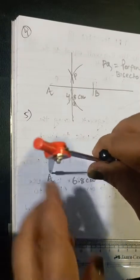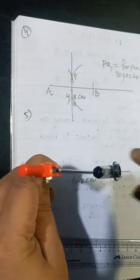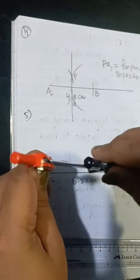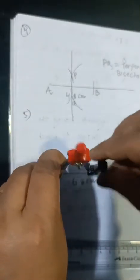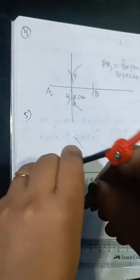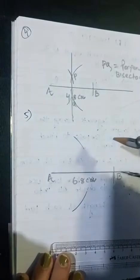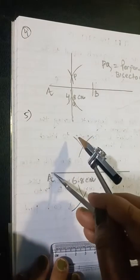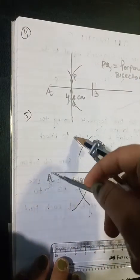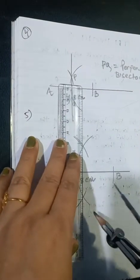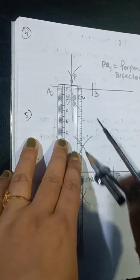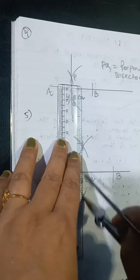Now we have to construct the perpendicular bisector. Take the measurement of the middle, that is 6.8 cm, and draw an arc. Now join these two points — this one and this one.